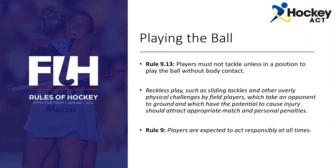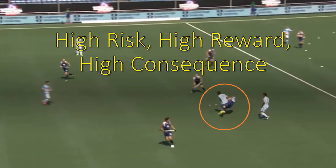So what do the rules actually say? Rule 9.13 states that players must not tackle unless in a position to play the ball without body contact. The guidance attached to this rule is that reckless play, such as sliding tackles and other overly physical challenges by field players, which take an opponent to ground and which have the potential to cause injury, should attract appropriate match and personal penalties. We need to remember at all times, under Rule 9, that players are expected to act responsibly at all times. The rule book does not say there are no illegal places to tackle from — there are just high-risk places where you will make contact with the other person's body.